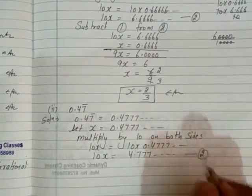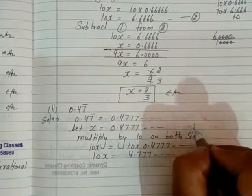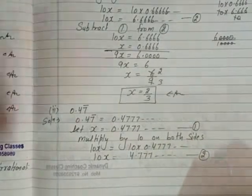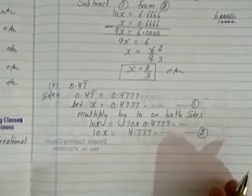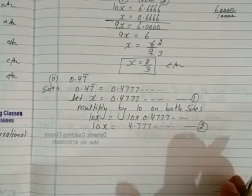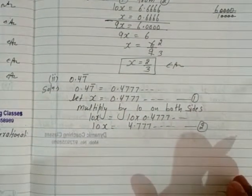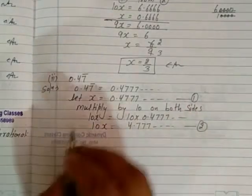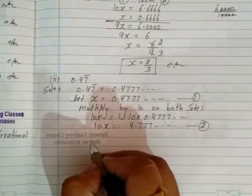This becomes equation 2, and the original x equals 0.4777... is equation 1. Now we subtract equation 1 from equation 2.